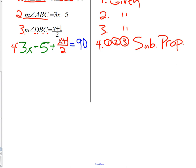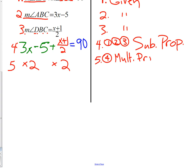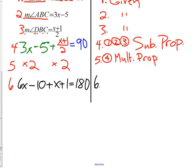Next, we're going to try and move through the proof to come to our answer. For step five, we multiply the equation in step four by two, using the multiplication property. So using statement four and the multiplication property, our new statement is 6x minus 10 plus x plus 1 equals 180 — we multiplied everything in step four by two. The reason we're able to do that simplification is, again, the substitution property.